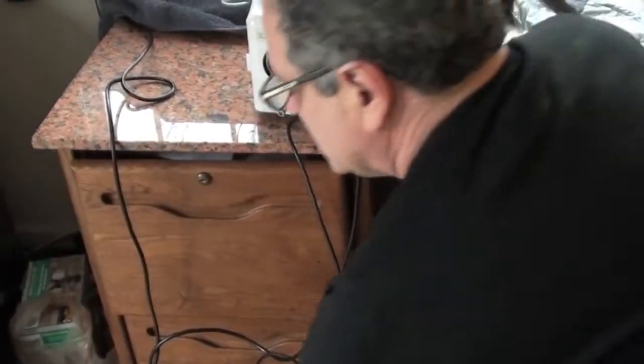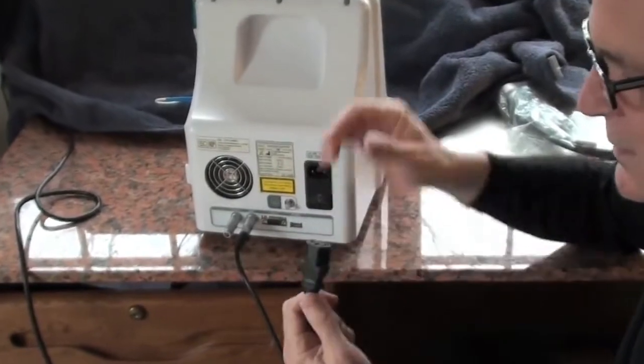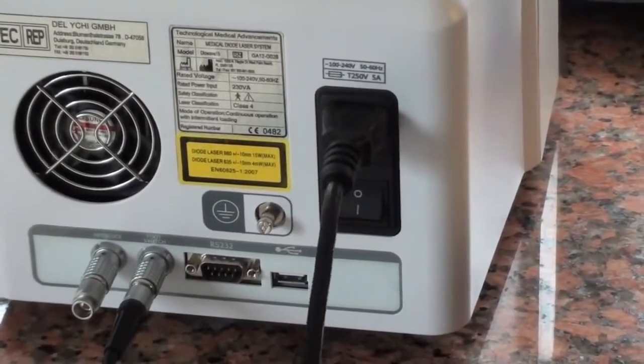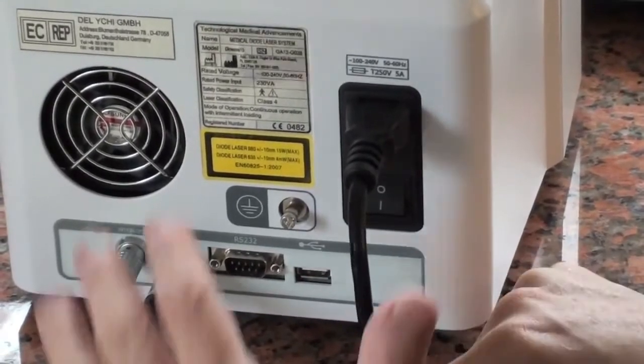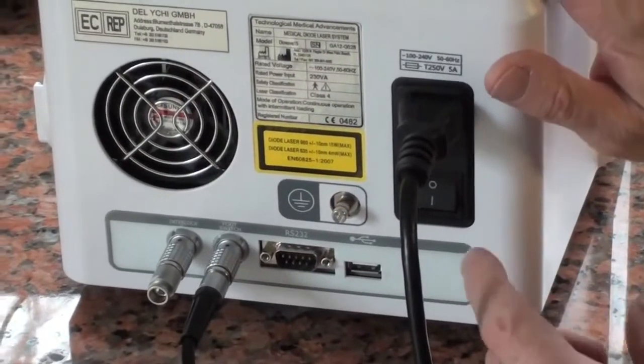The last thing that needs to be plugged in, now remember everything is turned off, is the power cord. Slips in, make sure it's tight. This is a typical classical power cord that you use in a computer. So everything is set up, the interlock, the foot pedal, and the power cord.